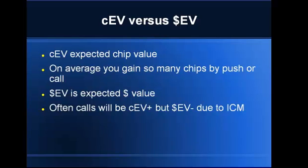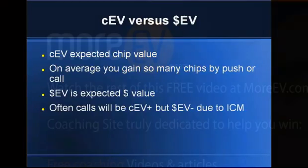Chip EV versus dollar EV. Chip EV is the expected chip value — this is the language you see on 2+2. Basically, if you push and calculate the probabilities that you just steal, the probabilities you get called and lose, and you get called and win, and you multiply the probabilities by the amount of chips, you get your chip expected value. So on average, it's how many chips you would gain or lose. A lot of times something can be chip EV-plus, meaning you expect to gain some chips.